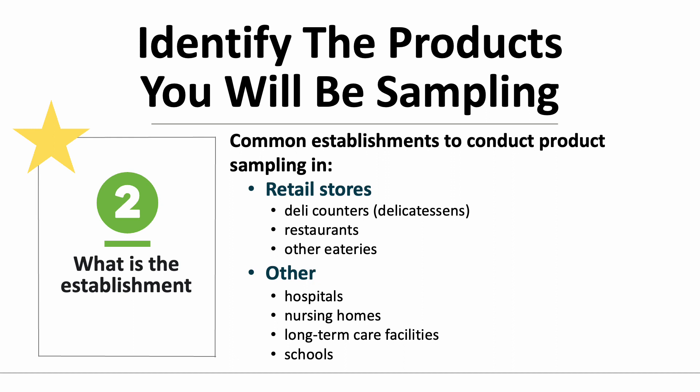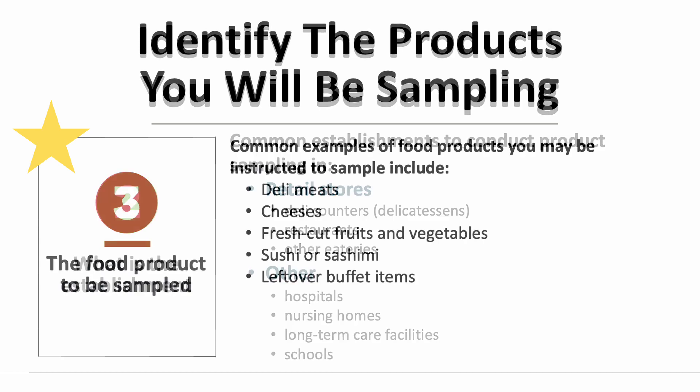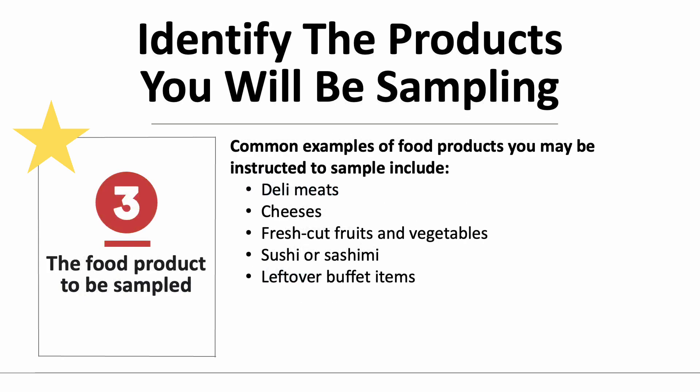You may also be instructed to sample one specific food product type or multiple different foods. It is important to communicate with your epidemiological partners about the type of food products you will be sampling. Some common examples of food products you may be instructed to sample include deli meats and cheeses, fresh cut fruits and vegetables, sushi or sashimi products, and leftover buffet items.